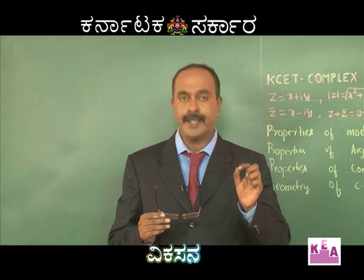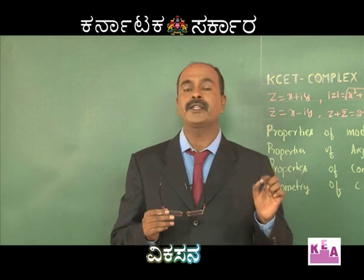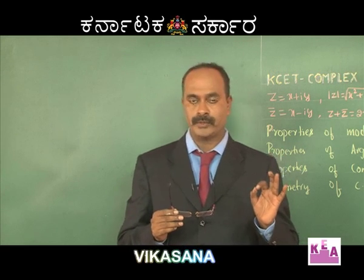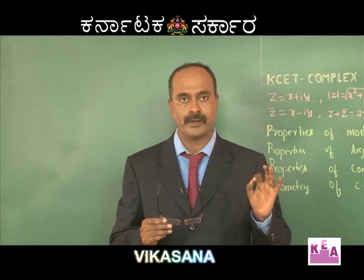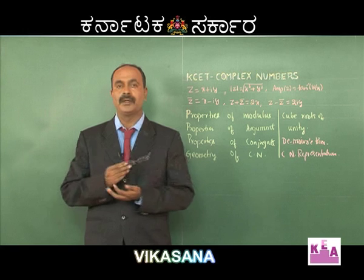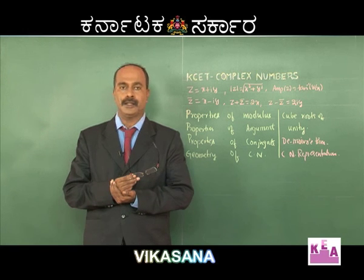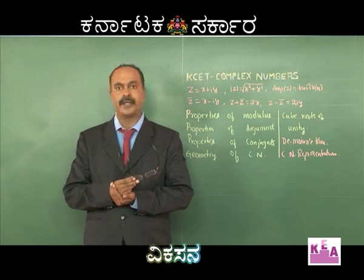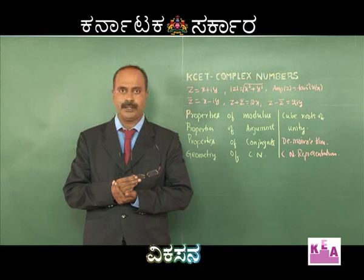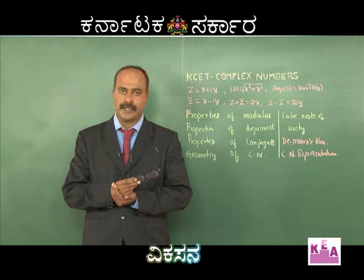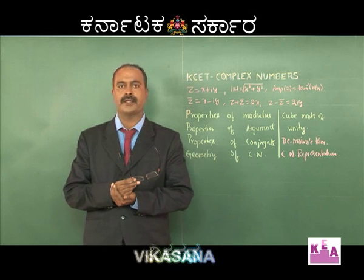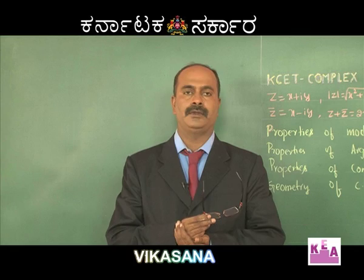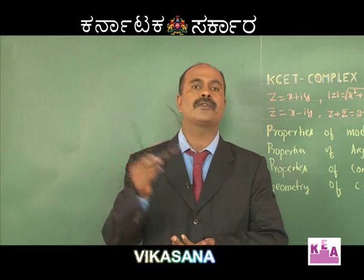Where i = √(−1), i² = −1, i³ = −i, and i⁴ = +1. A complex number can always be represented in the Argand plane or complex plane, where the x-axis is taken as the real axis and the y-axis is taken as the imaginary axis. This you should have studied in your first year PUC.